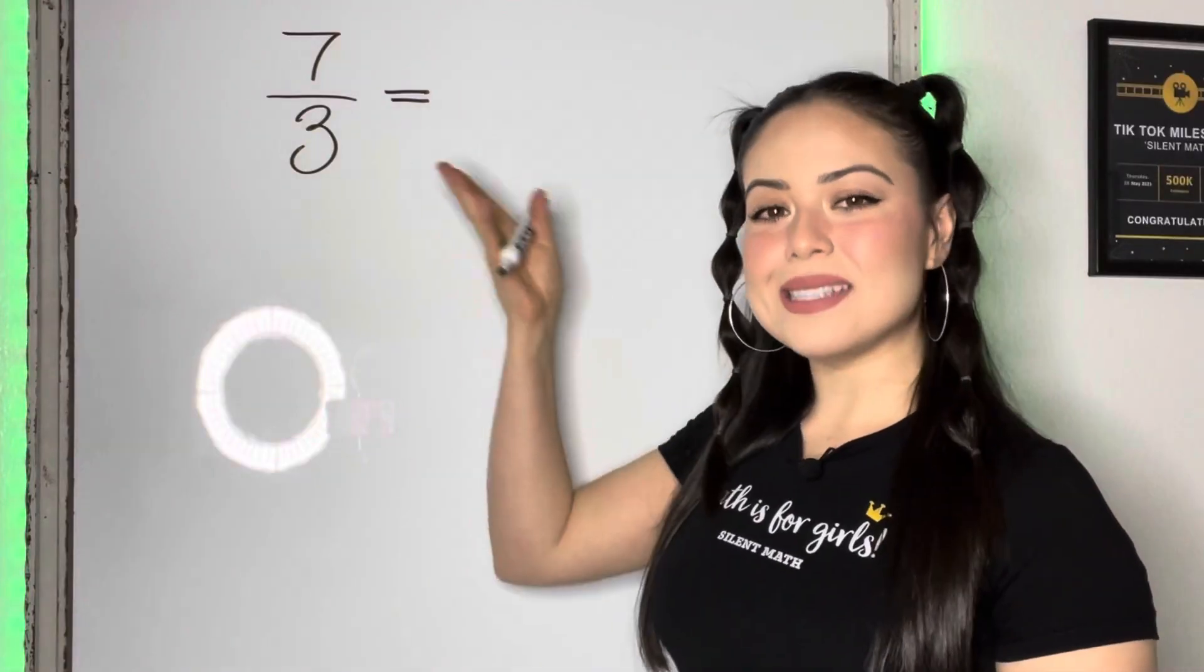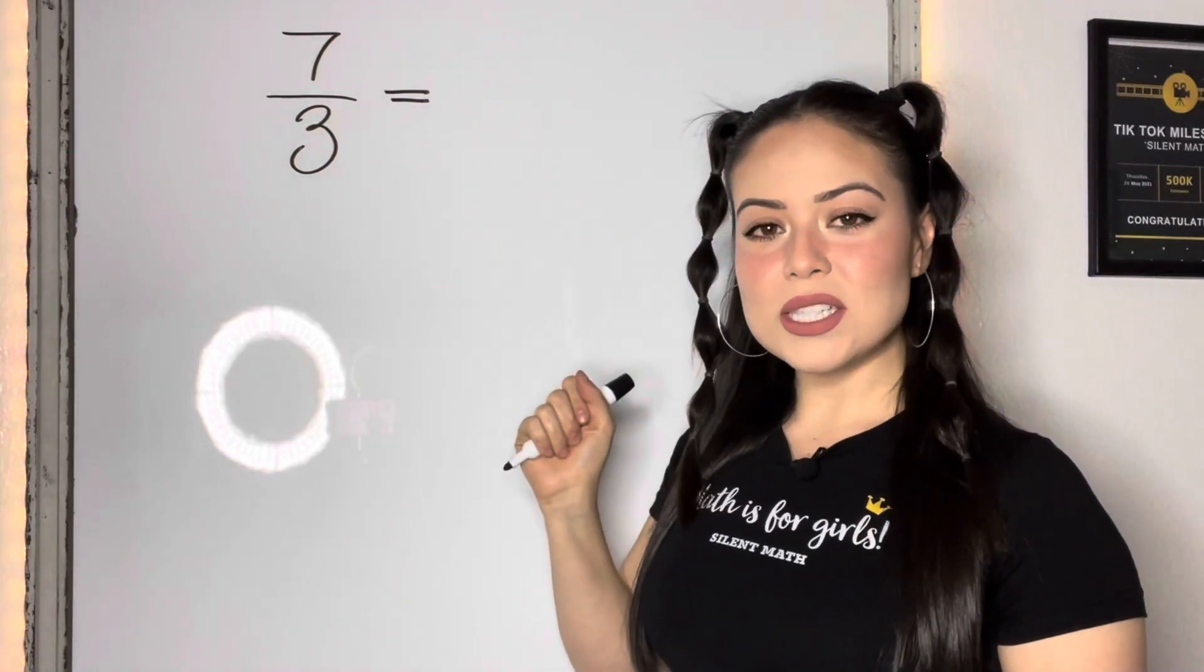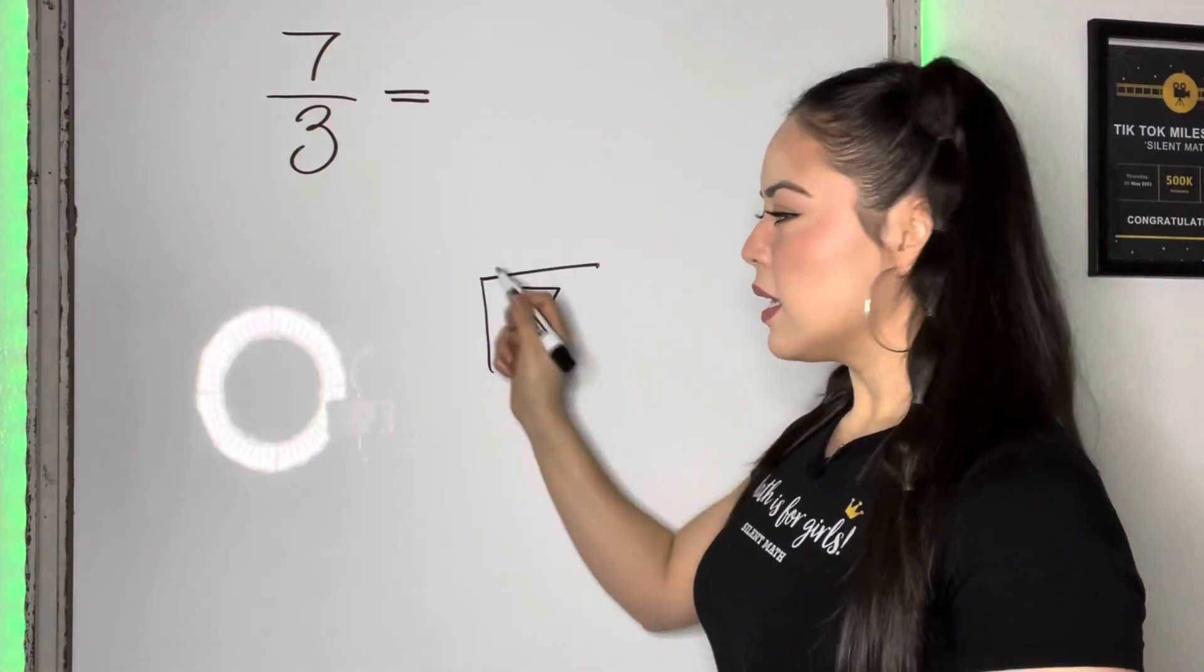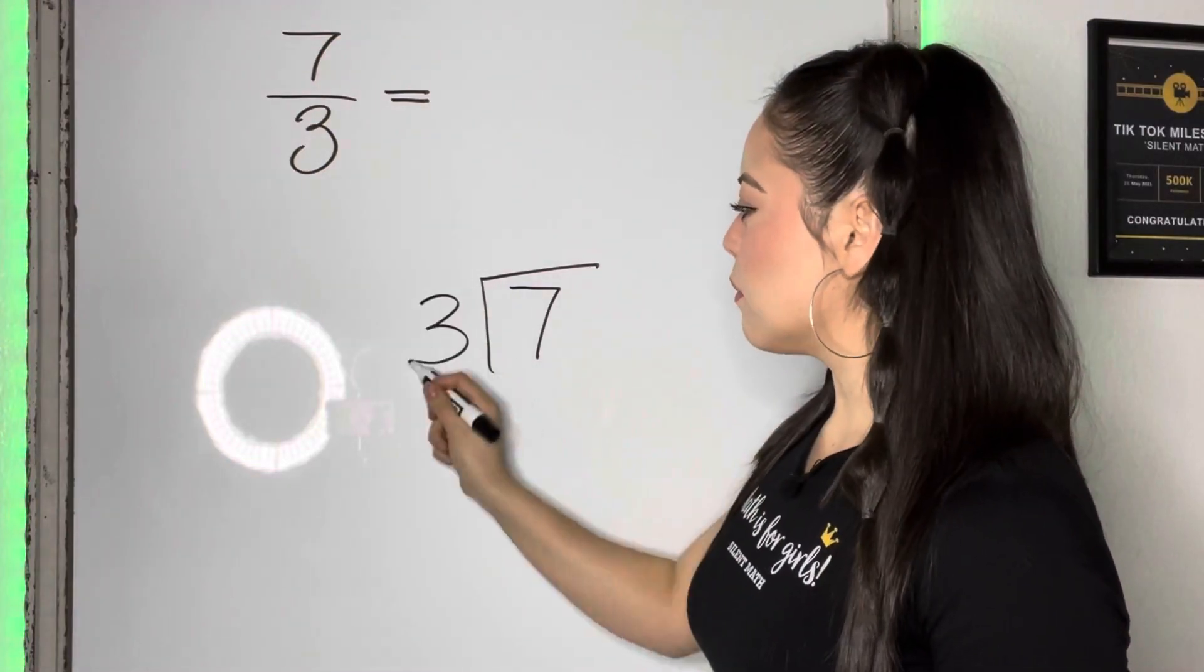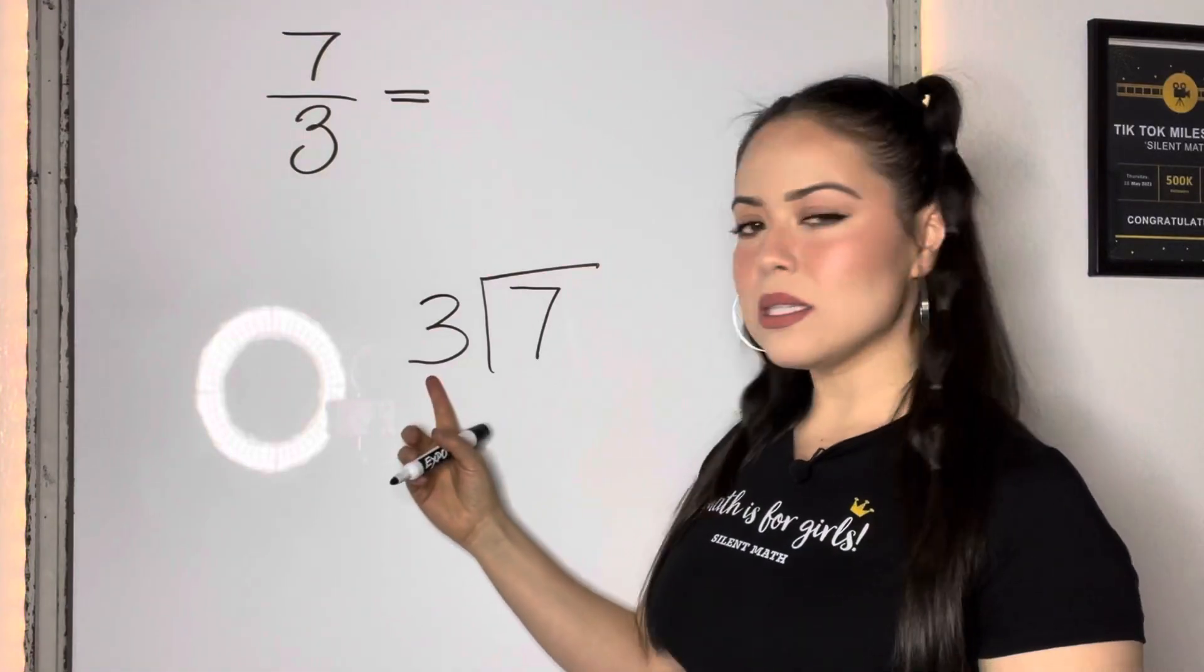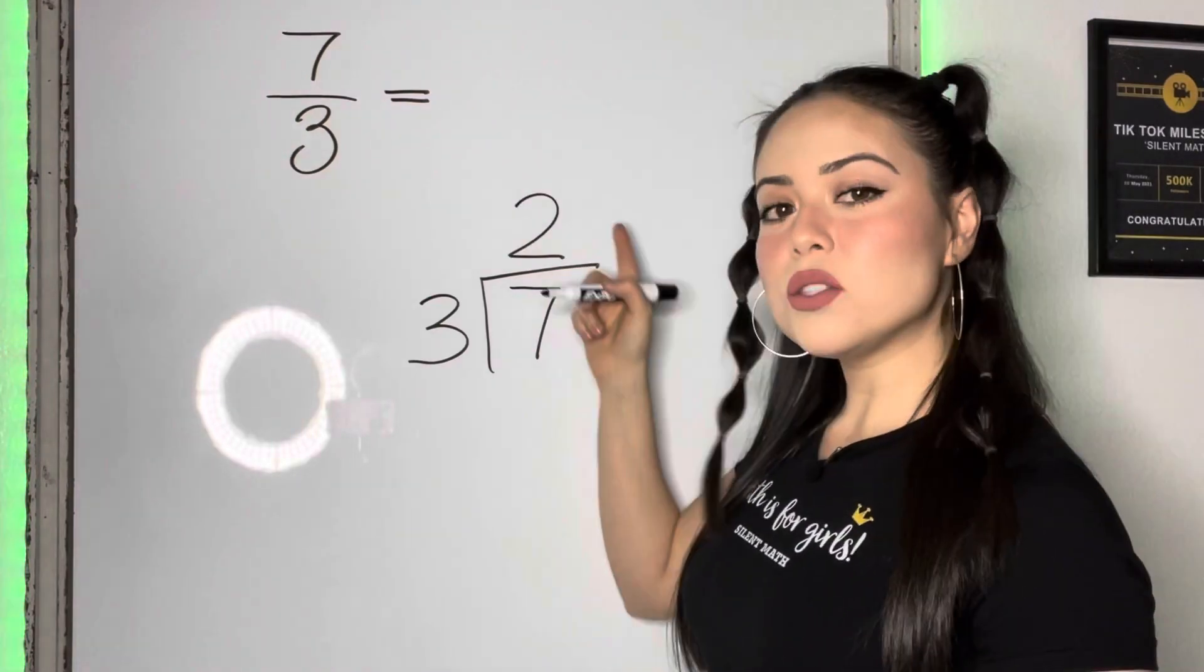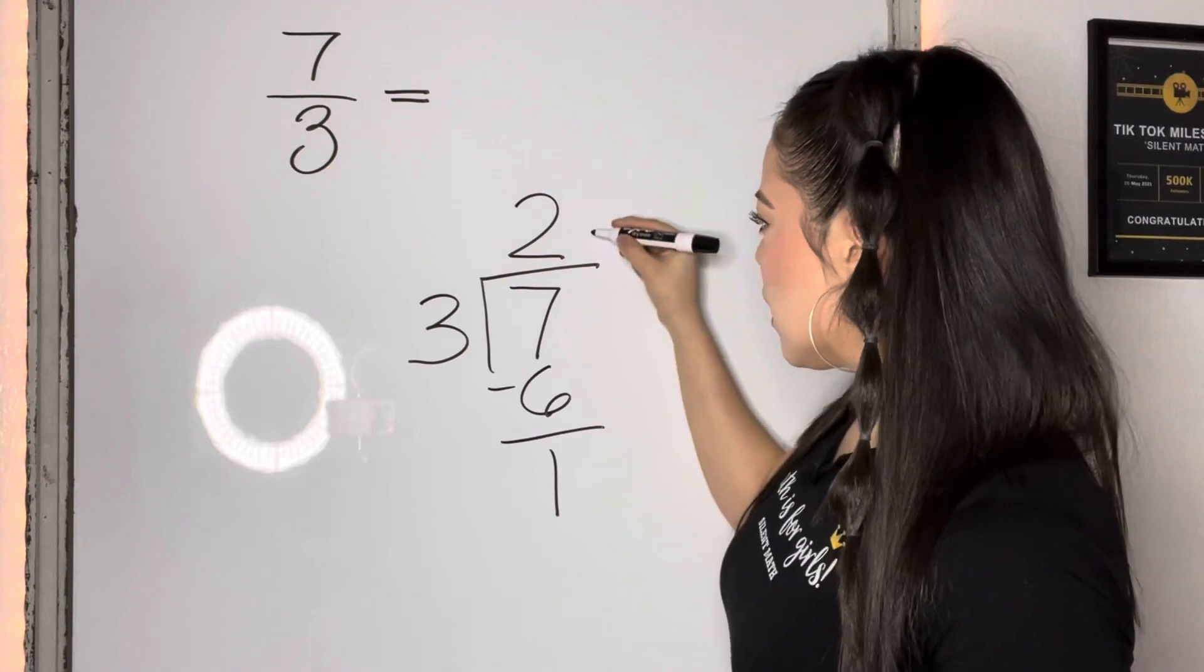Let's look at our first example, 7 thirds. Let's turn this into a mixed number. All fractions are a form of division, so we can write it like this. Seven will be our dividend, or the number under our division sign, and then your denominator is going to be your divisor, the number that's gonna be on the outside. And you wanna ask yourself, how many times does this number go inside of this number? Three goes into seven twice without going over, because two times three is six. We're going to subtract, and our remainder is one.